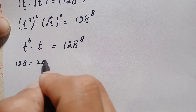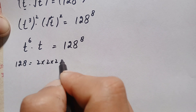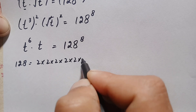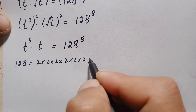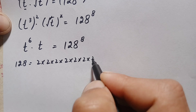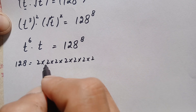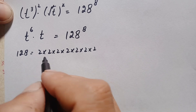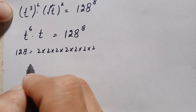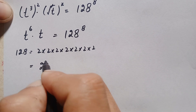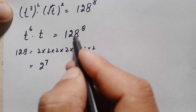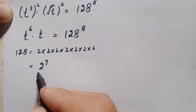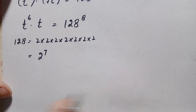Next we can write 128 in exponential form: 2 × 2 = 4, 4 × 2 = 8, 8 × 2 = 16, 16 × 2 = 32, 32 × 2 = 64, 64 × 2 = 128. So 2 is multiplied 7 times, therefore 128 can be written as 2 raised to the power 7.